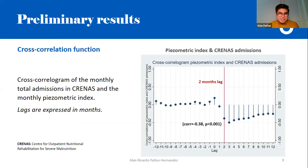To test this hypothesis, we used cross-correlation functions. The results show a temporal correlation that is plausible: the number of admissions due to malnutrition were correlated with decreases in the piezometric index, but two months after those decreases happened — not at the same time.